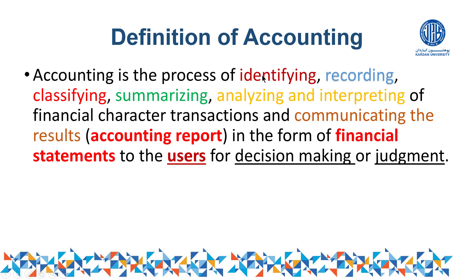The steps of accounting are: number one, we have to identify; number two, we have to record in the book of account; number three, we have to classify; number four, we have to summarize; number five, we have to analyze; and number six, we have to interpret the financial character transactions. After that, we communicate the results in the form of financial statements to the users for decision making.